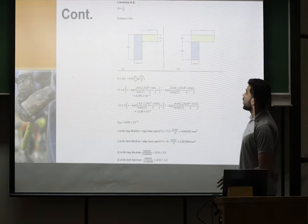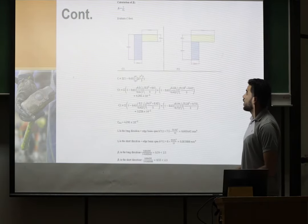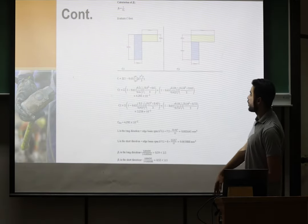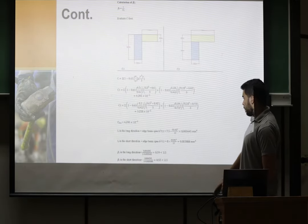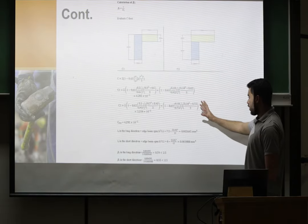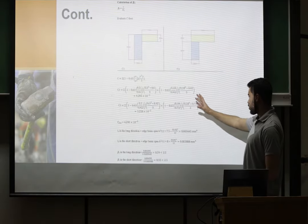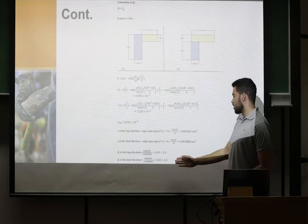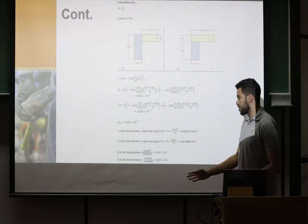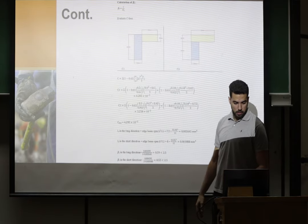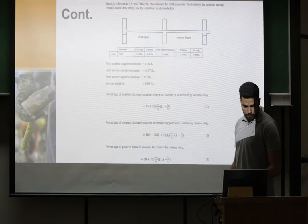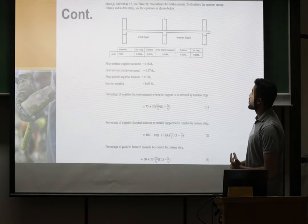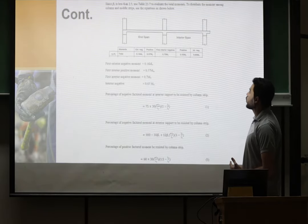We continue calculating of beta T. So we evaluate C first. So the C is summation of the long direction and the short direction to find if the beta in long direction is less than 2.5 or it's bigger than 2.5. As we showing here there is end span and interior span. So it's ACI code.